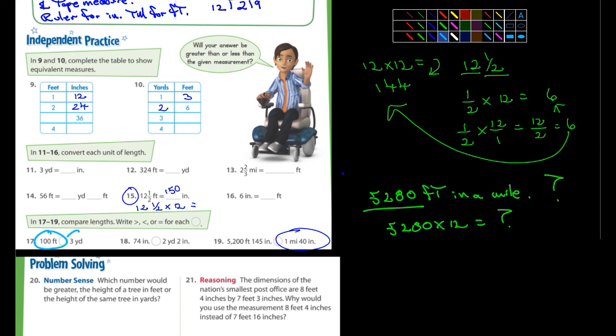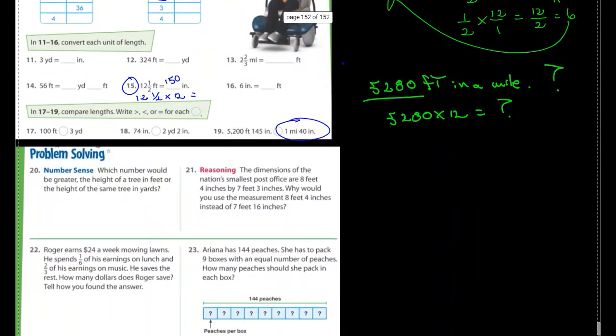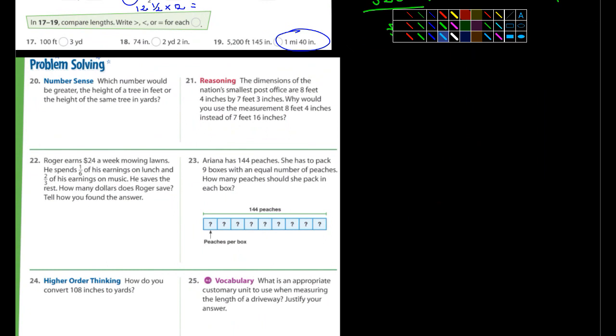When you're comparing two numbers like that, that's what you have to do is convert them to the same thing. So, this one's in inches. So, convert these to inches. And then you'll know which one's larger. This is in feet. This is in yards. Well, I would probably just convert the three yards into feet. And that would help you answer that one. So, sometimes when they ask you to compare numbers like that, like they're doing in 17, 18, and 19, you'll have to convert them so they have the same measurement. And then you can tell which one's larger or which one's smaller.